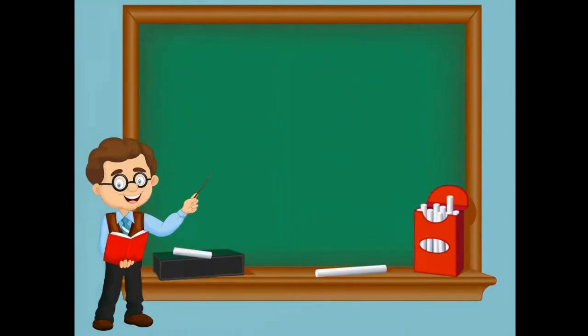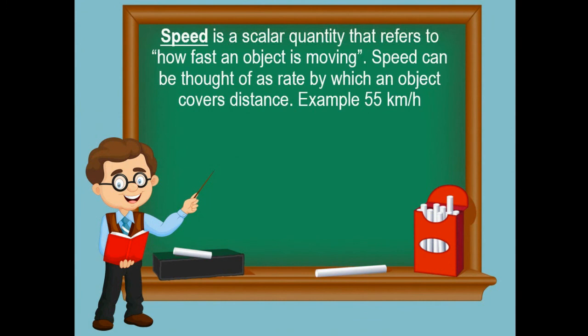Speed is a scalar quantity that refers to how fast an object is moving. Speed can be thought of as the rate by which an object covers distance. Example: 55 kilometers per hour. The units of measurement of speed are kilometer per hour...